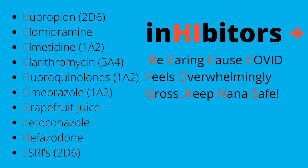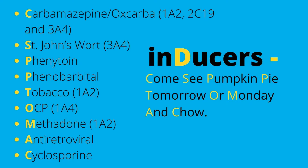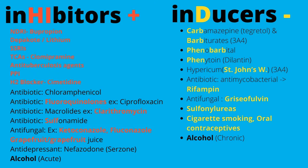Some test questions ask you to know the associations with different subtypes such as 2D6 or 1A2, so take notes — I've only put the ones you really need to know and focus on. Here are the inducers: carbamazepine, oxcarbazepine, St. John's Wort, phenytoin, phenobarbital, tobacco, oral contraceptives, methadone, antiretrovirals, and cyclosporins. The mnemonic is: 'Come See Pumpkin Pie Tomorrow Or Monday And Ciao.'